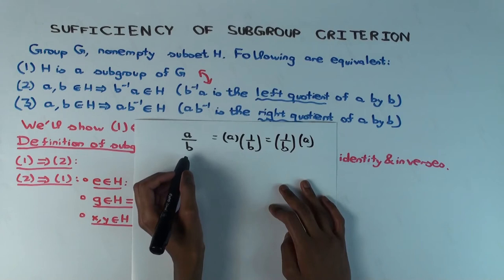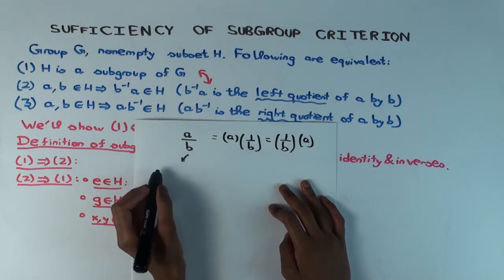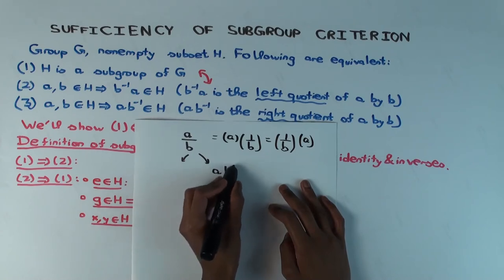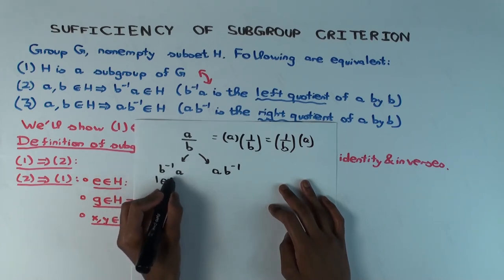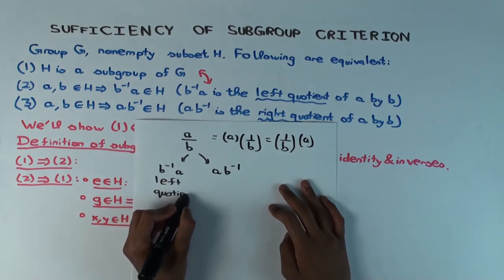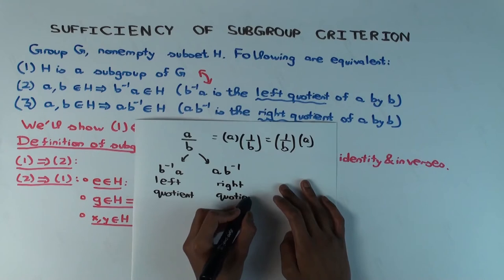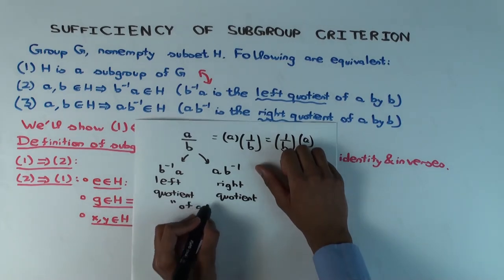However, if you're working in a non-commutative situation — groups by default don't assume commutativity — then there are two interpretations of A over B. Writing B inverse instead of one over B, one possibility is A times B inverse, and the other is B inverse times A. The first is called the right quotient and the second the left quotient — though some people use the words in the reverse order.